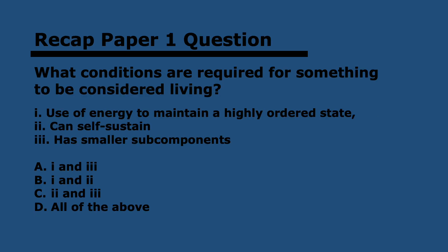Let's do a quick recap question: what conditions are required for something to be considered living? The answer is B. It needs to have the ability to use energy to maintain a highly ordered state, and it needs to be able to self-sustain. However, having smaller subcomponents is not a requirement. This can be tricky because cells do have subcomponents, but this is not a requirement for a living being. Make sure you are answering the question and not just writing down what sounds correct.